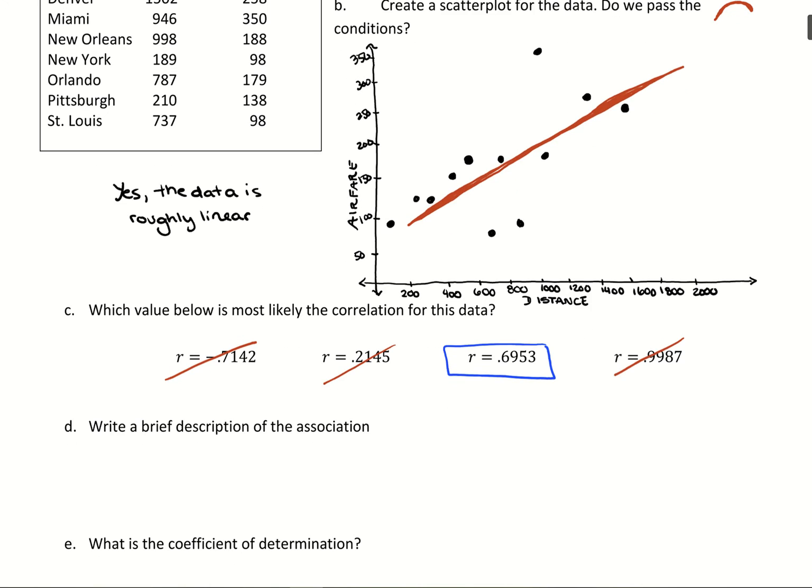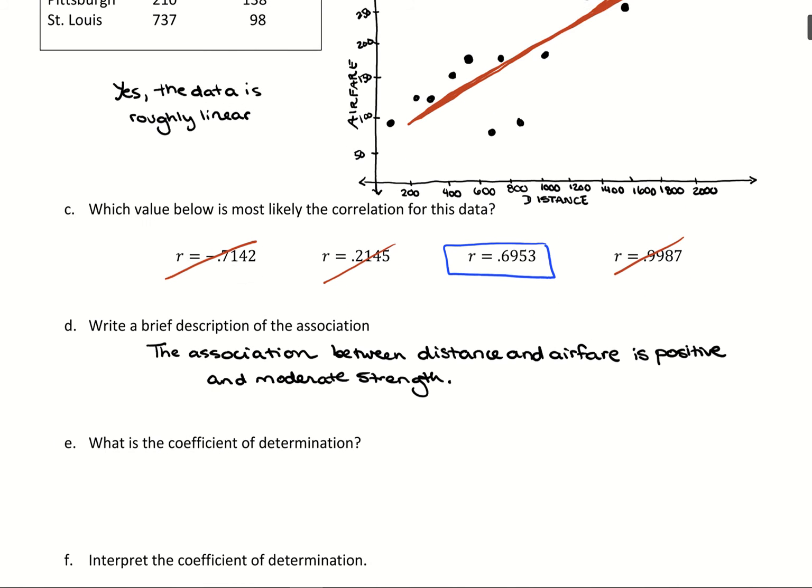To interpret that, if we think about where we land on the number line, it would be positive and moderate. What we could say is the association between airfare and distance is positive and moderate strength. That's how we would interpret the association based on where we're landing on that negative one to positive one number line.